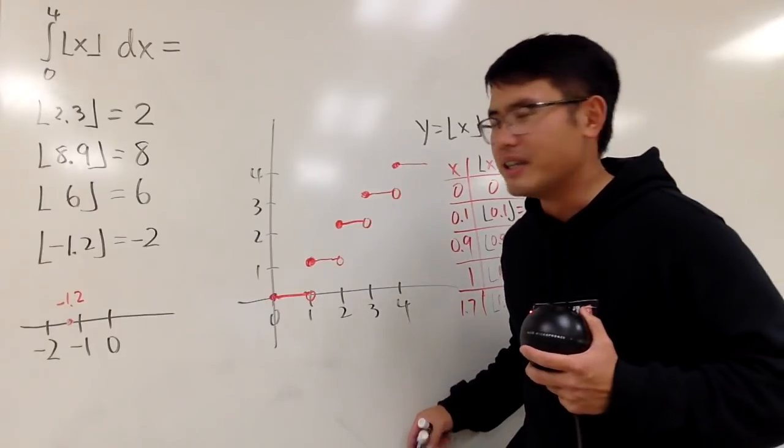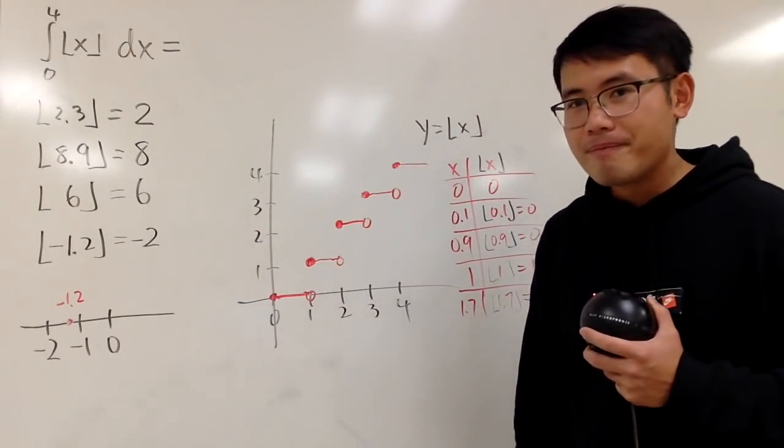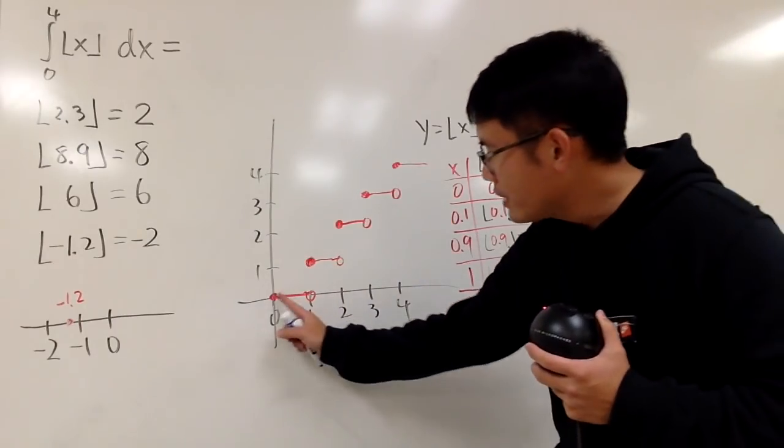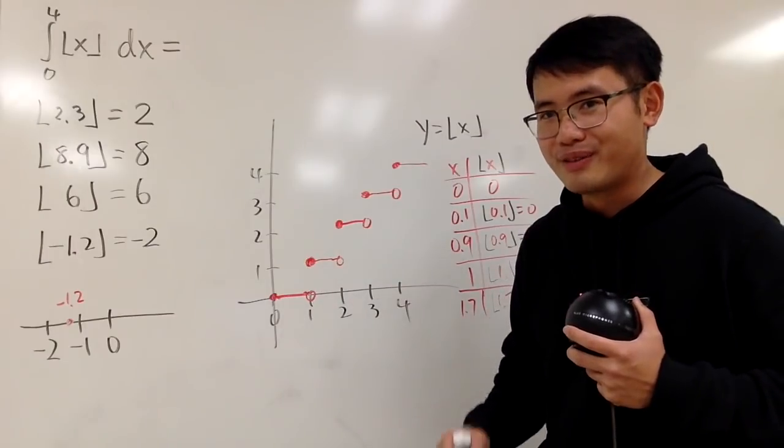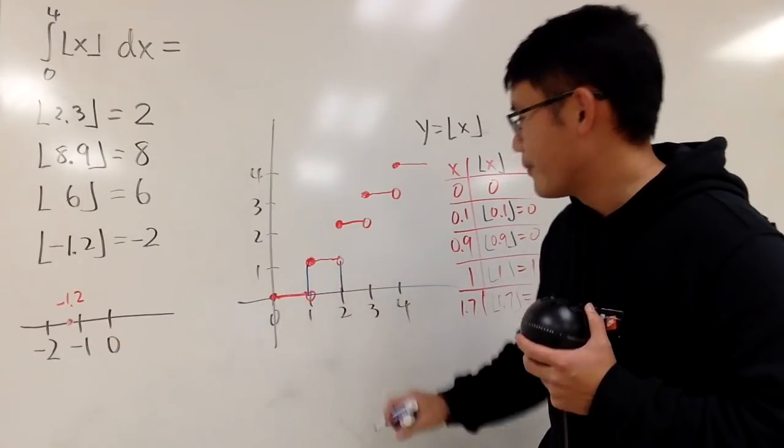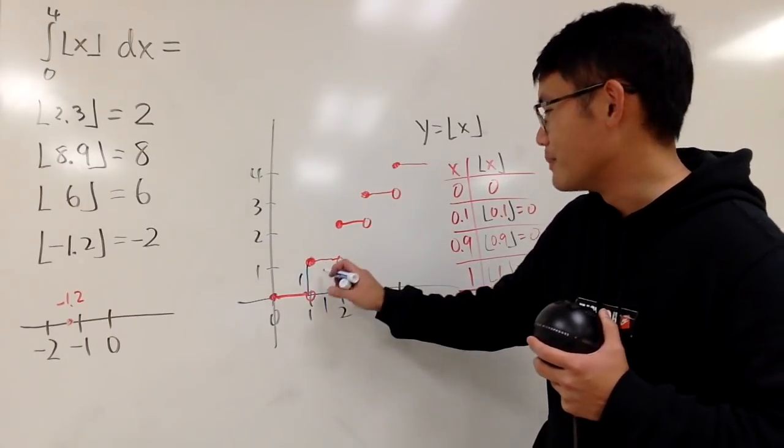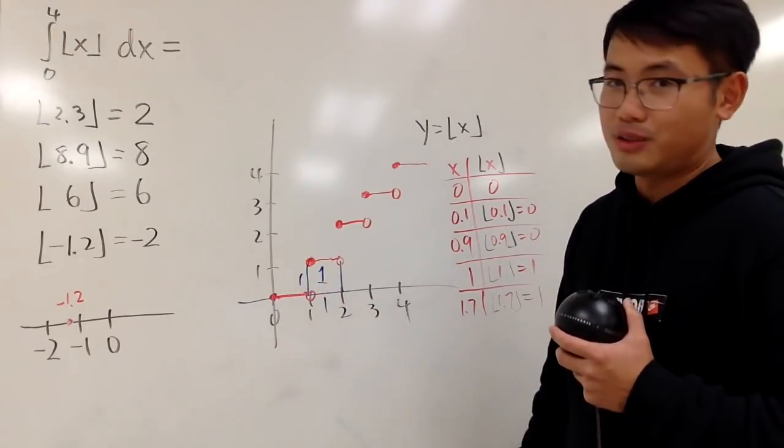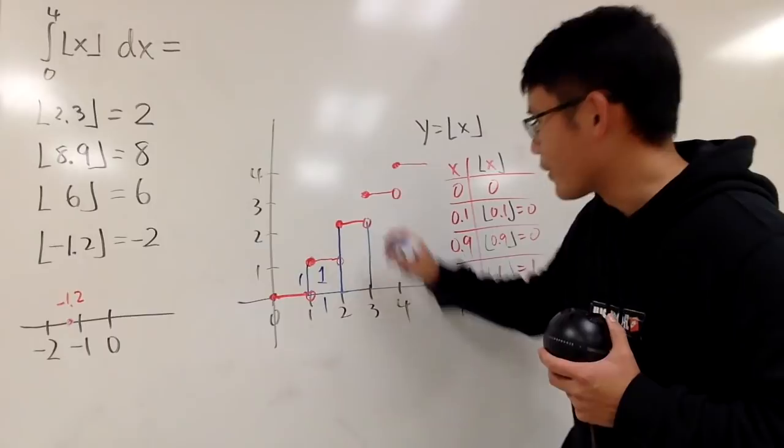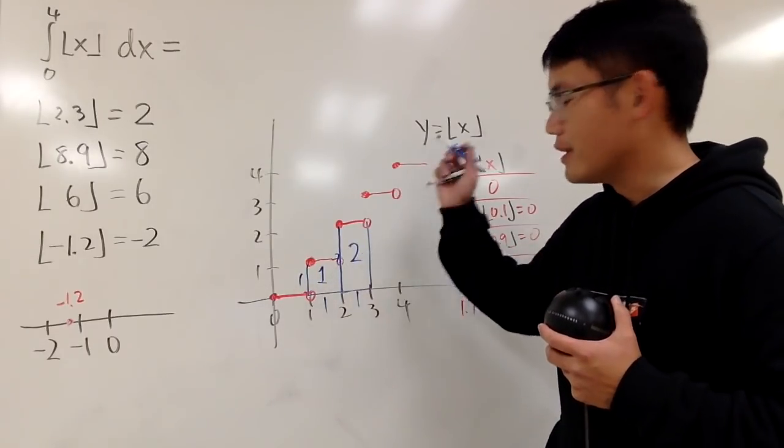To integrate this, remember, we are still trying to find the area. Don't let the open circles bother you. From here to here, there's no area under the curve. Now, we are just going to find the area right here. The base right here is 1, the height right here is also 1. 1 times 1 for the area right here is just 1. Next, you find the area under this curve, from here to here. The base is 1, the height is from 1 to 2, so the area here is 2.